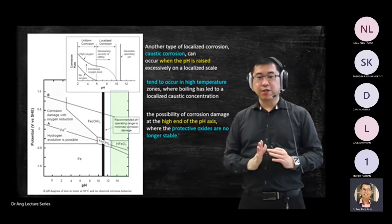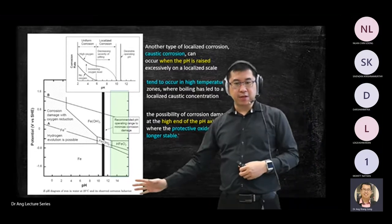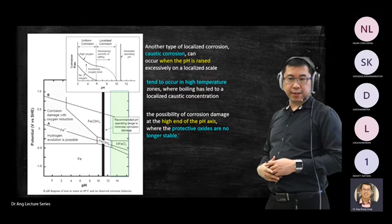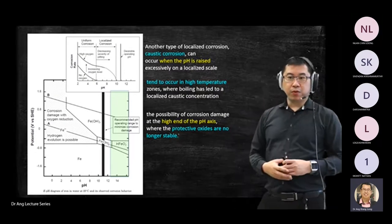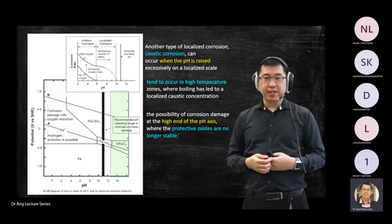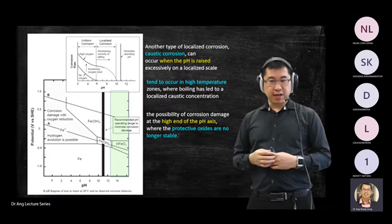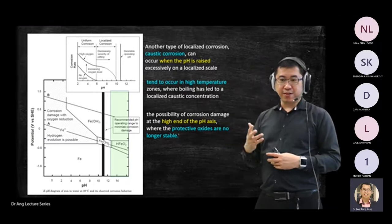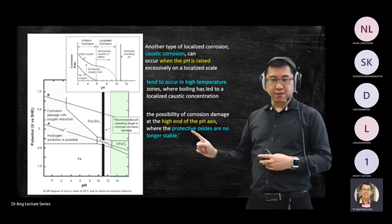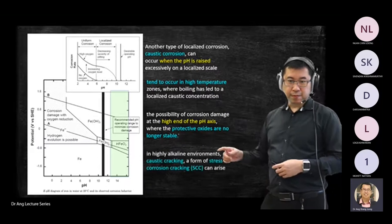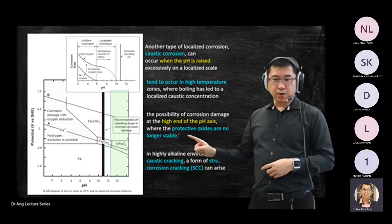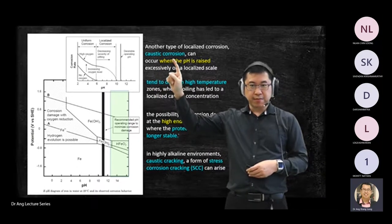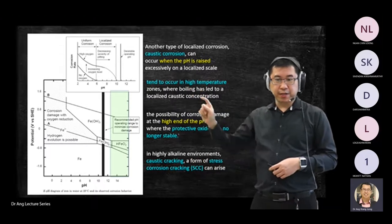I want you to understand what happens if you reduce or increase the pH based on the potential versus pH diagram. If you increase the pH too high until it becomes too alkaline, the protective oxide layer is no longer stable or dissolves, and a new type of corrosion called caustic corrosion will happen, causing cracking.